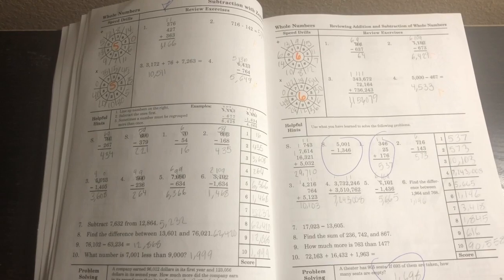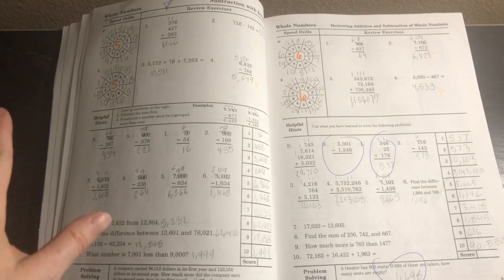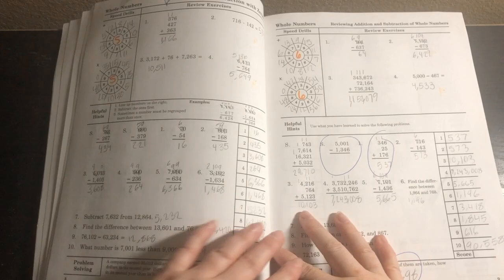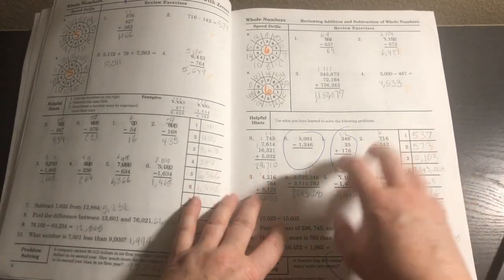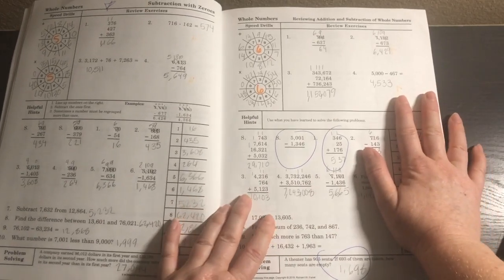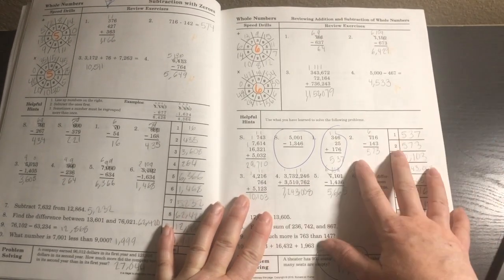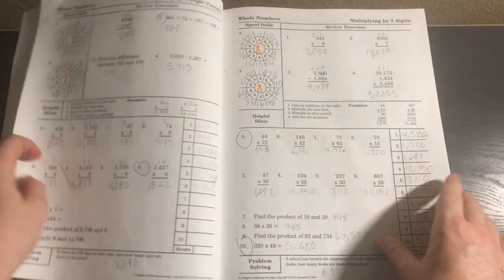At the bottom there's always a problem solving problem. Every day my daughter does one page independently and then I check it. If everything's right, awesome. If she has anything wrong, I sit down with her and we work it out on another piece of paper together.